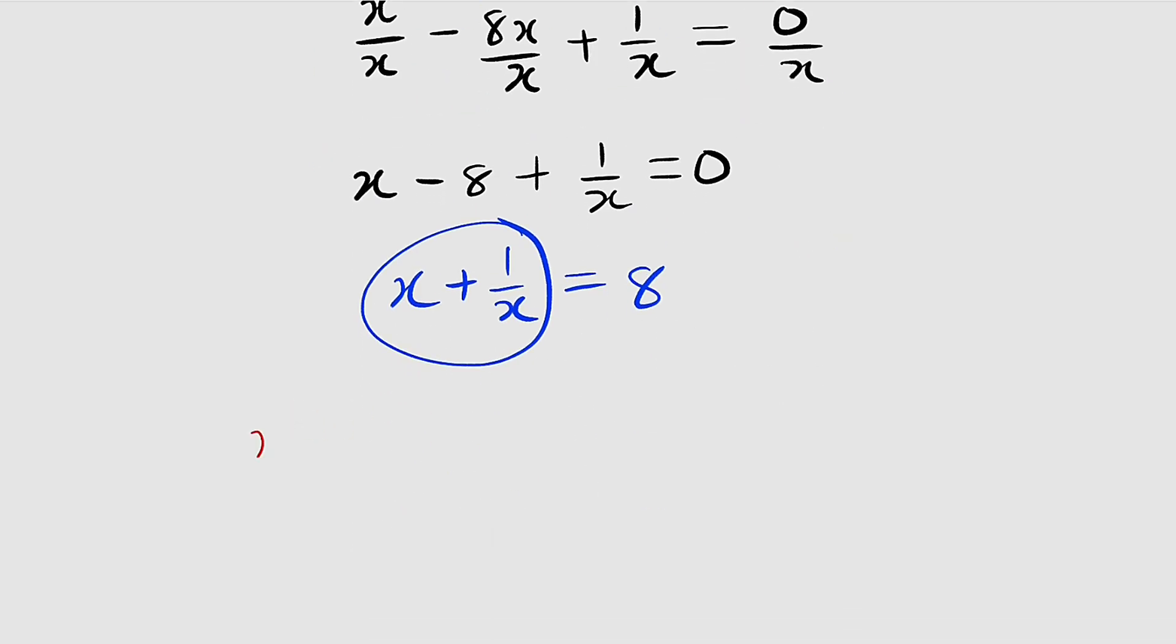So (x + 1/x)² is equal to, you take the first term and square that, you have x², plus you take the second term and square that, you have 1/x². And you multiply 2 by the first term and also by the second term.